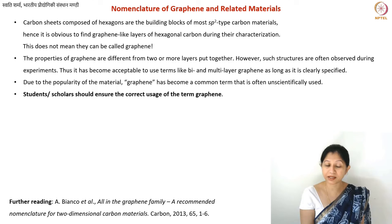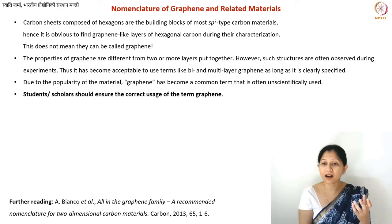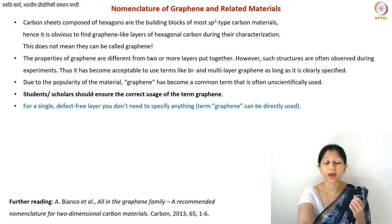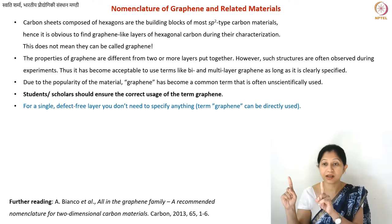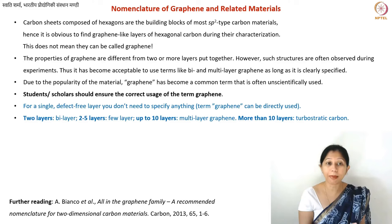There is an article published in the journal Carbon with a lot of guidelines — I have not repeated all of them since you can find the details there. It covers not just graphene but all bulk carbon materials which contain graphene. I have provided a summary here. The term graphene — without another word attached to it, so just the word graphene and not graphene layer — should only be used for single layer, defect-free, hexagonal, sp2 hybridized structures.